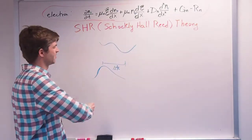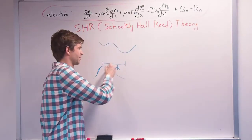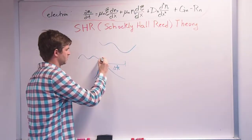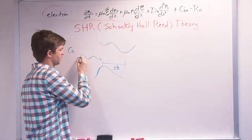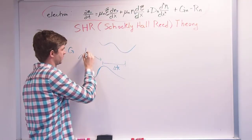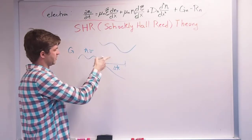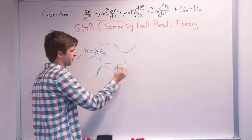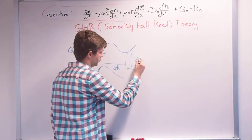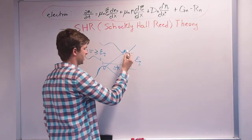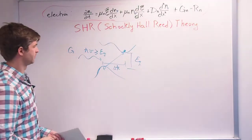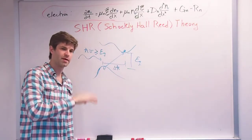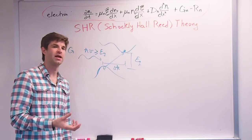A lot of this stuff is made from silicon. So how are these recombinations and generations happening due to light? Of course, because a generated electron at some generation point G — some phonons come with some energy hν, which must be greater than or equal to the bandgap in order to create an electron-hole pair. The way this process takes place in semiconductors is through something called recombination centers.